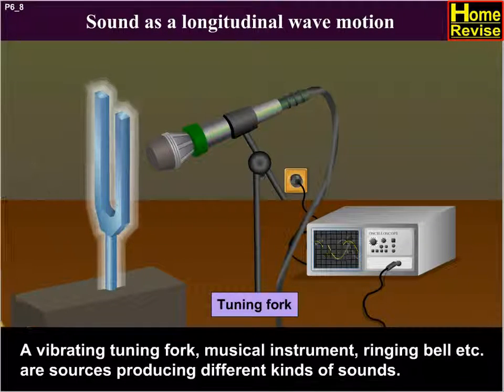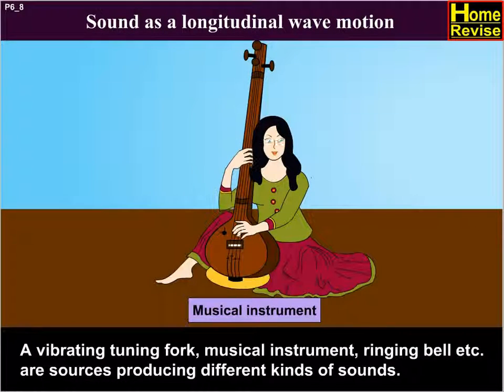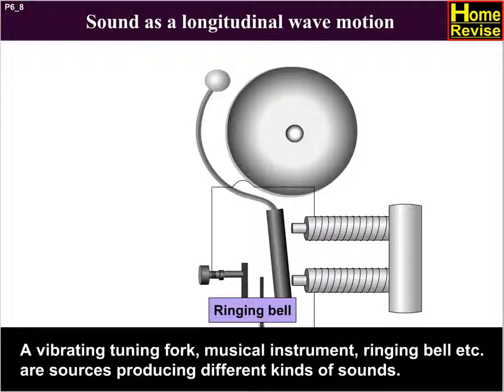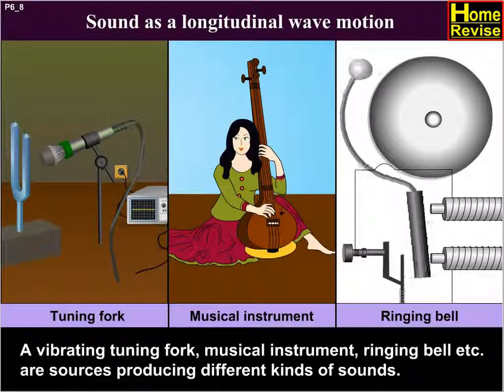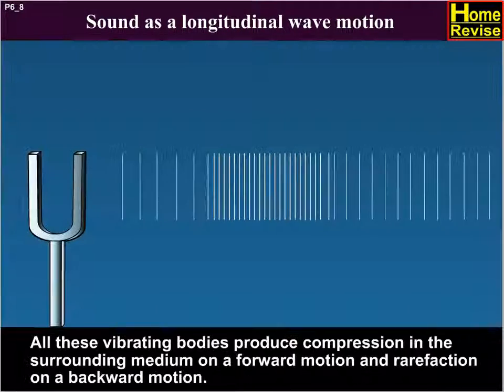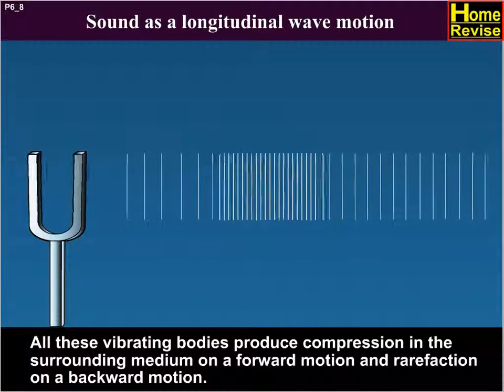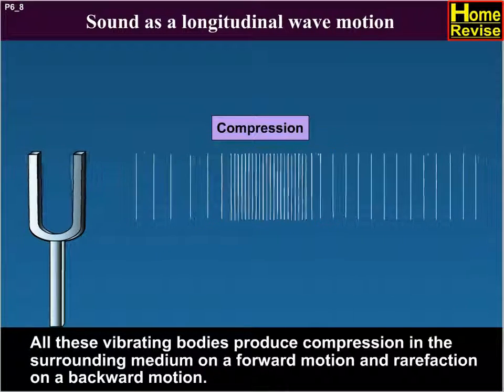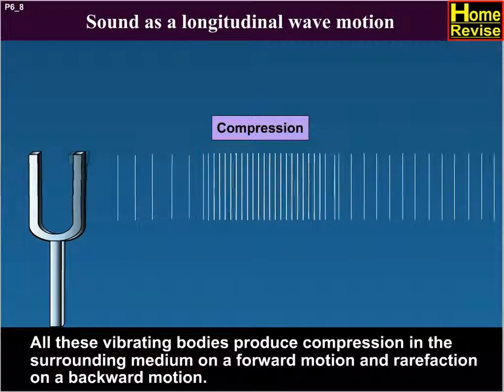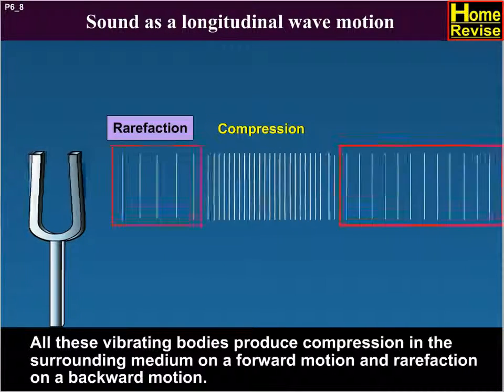A vibrating tuning fork, musical instrument, ringing bell, etc. are sources producing different kinds of sound. All these vibrating bodies produce compression in the surrounding medium on a forward motion and rarefaction on a backward motion.